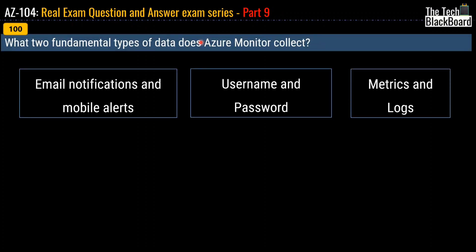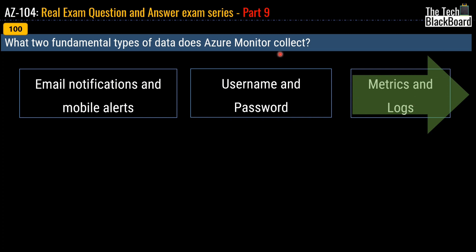Coming to question 100, the last question for part 9 of our AZ-104 real exam series: what two fundamental types of data does Azure Monitor collect? Options are: email notifications and mobile alerts; username and password; or metrics and logs. The correct answer is metrics and logs — that is what Azure Monitor collects for you.